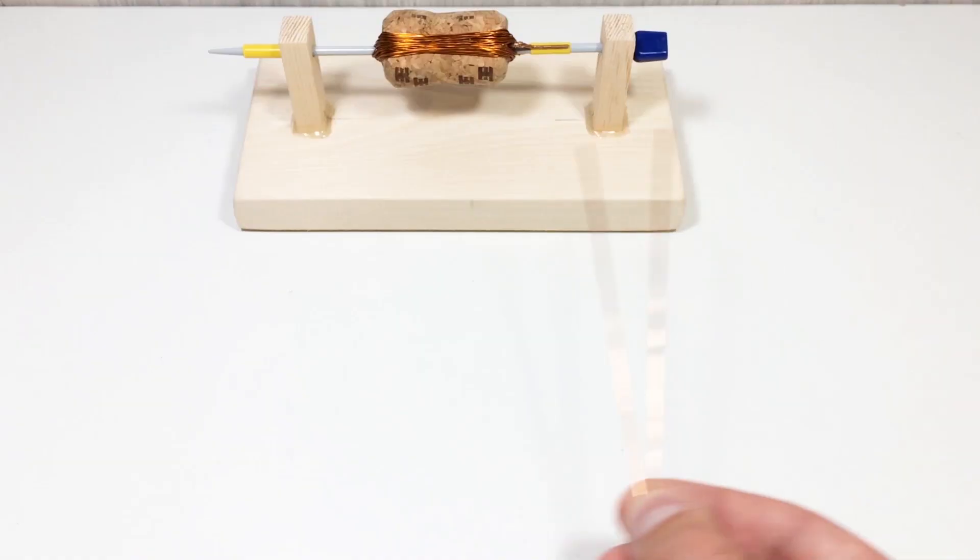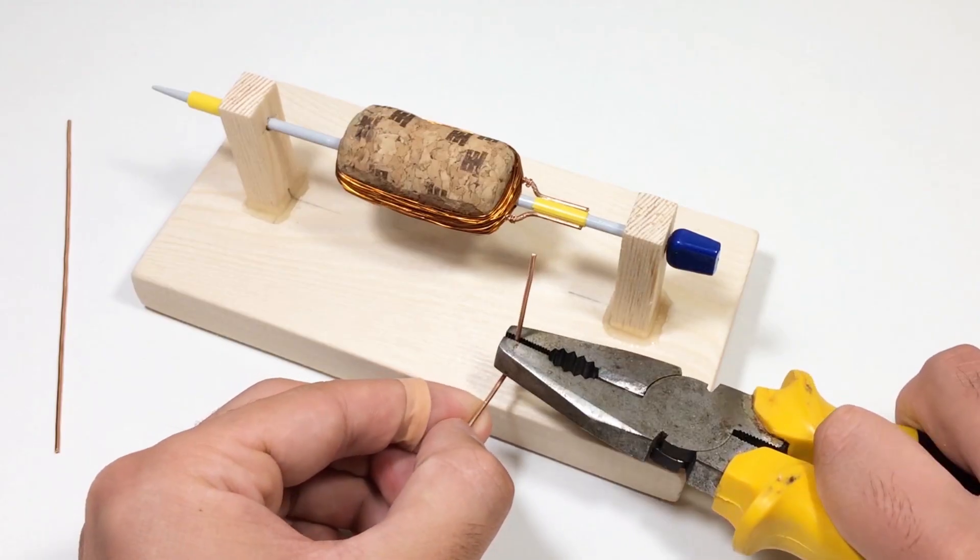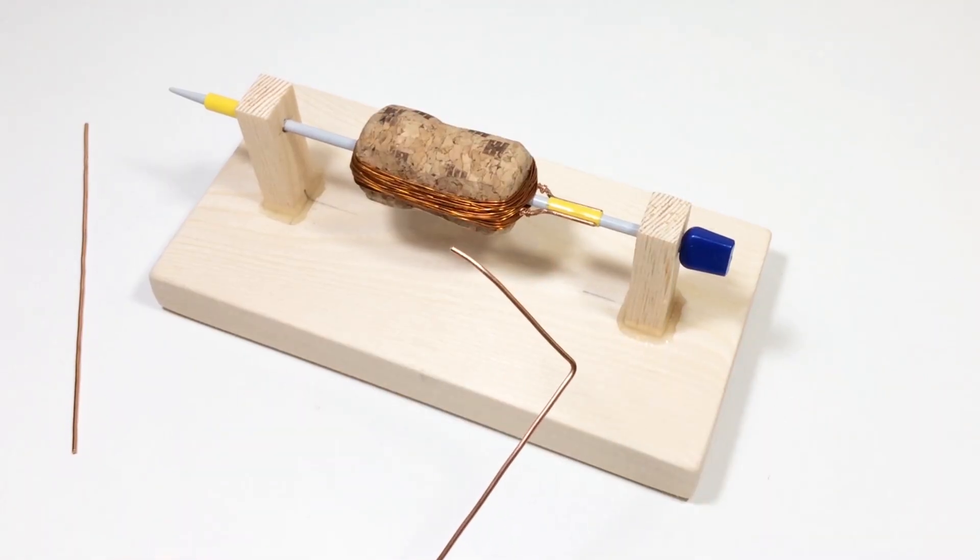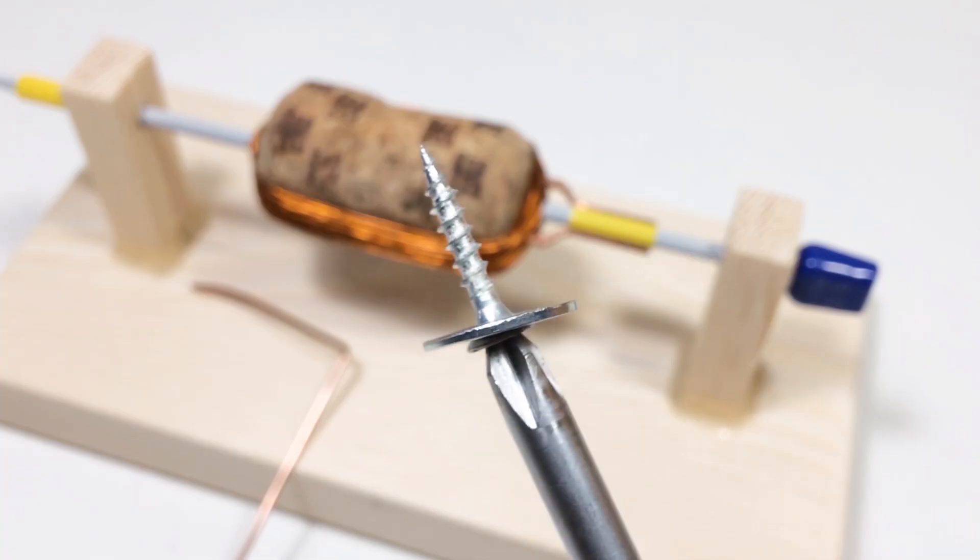Time for the contacts. Bend the thick copper wire into two supports and fix them onto the wooden base using screws. These will act as brushes that touch the coil ends and deliver power.